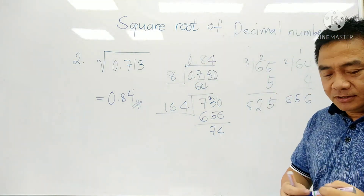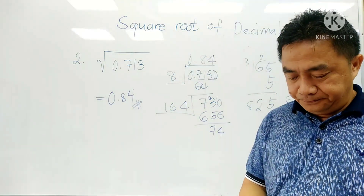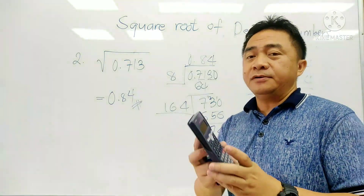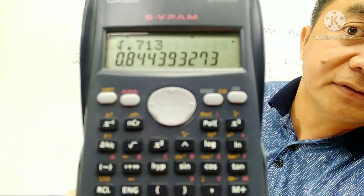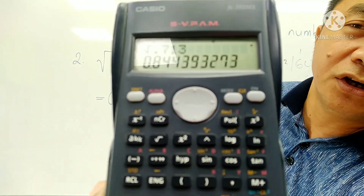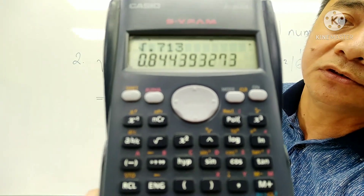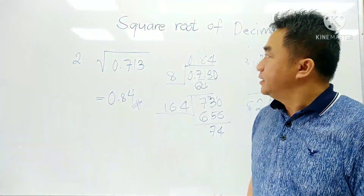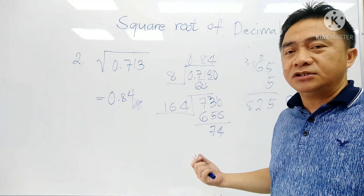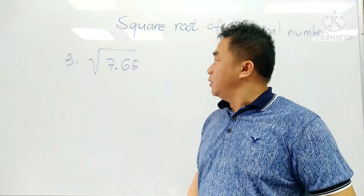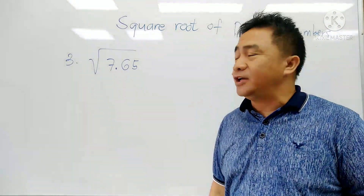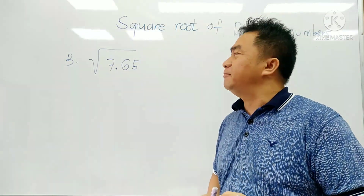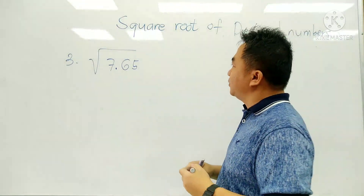Let me check if we get the correct answer. The square root of 0.713 — you see — the square root of 0.713 is 0.84, up to 2 decimal places. Now we go with our third number. We have the square root of 7.65. What is the square root of 7.65? So again, the same method that we're going to apply.